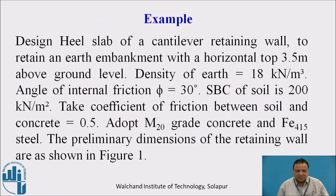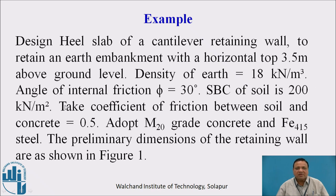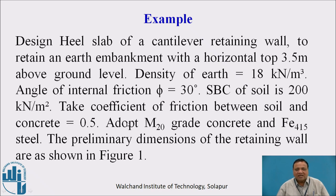Example: Design the heel slab of a cantilever retaining wall to retain an earth embankment with a horizontal top 3.5 meters above the ground level. Density of earth is 18 kN per cubic meter, angle of internal friction is 30 degrees, safe bearing capacity of soil is 200 kN per meter square. Coefficient of friction between soil and concrete is 0.5. Adopt M20 grade concrete and Fe415 grade steel.